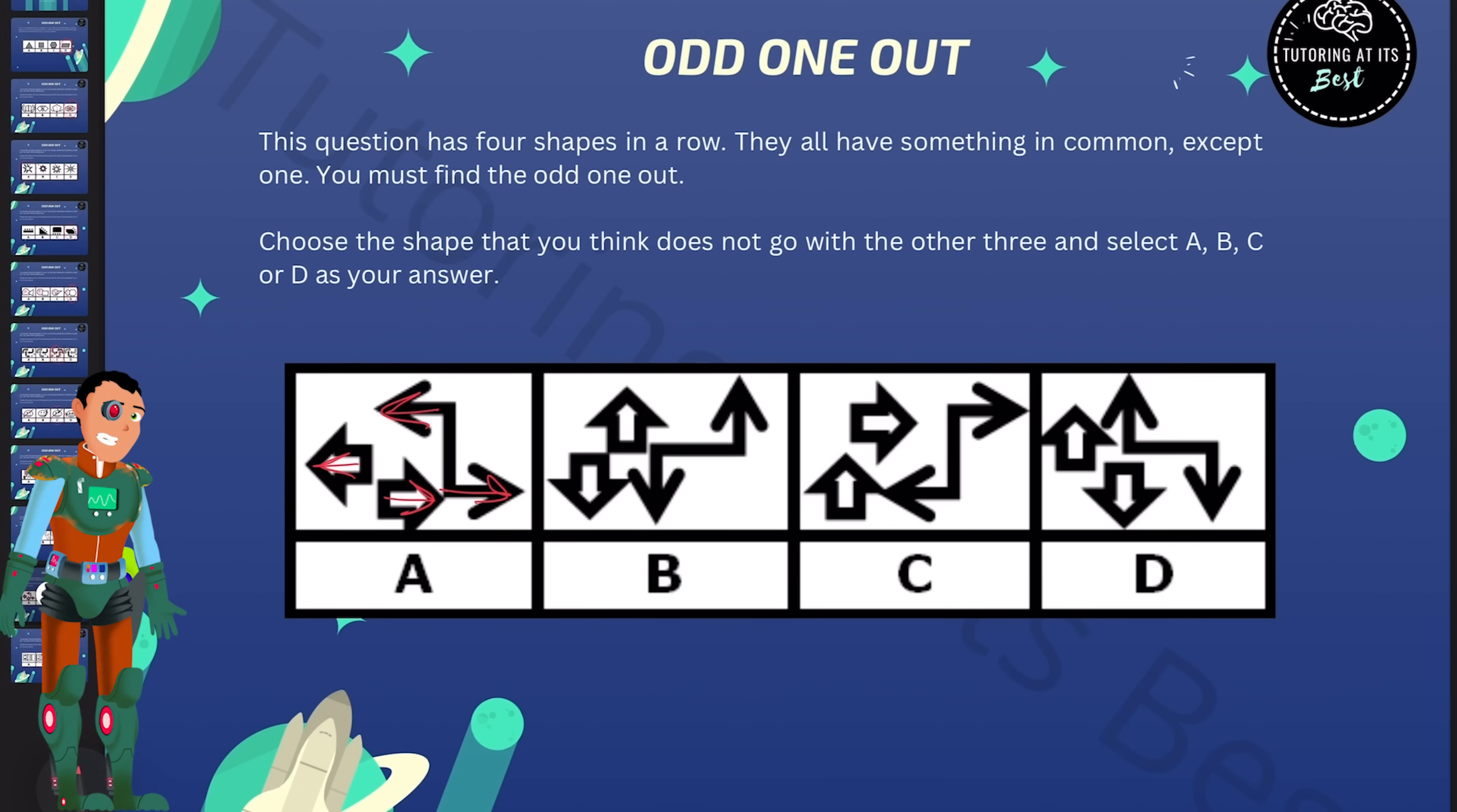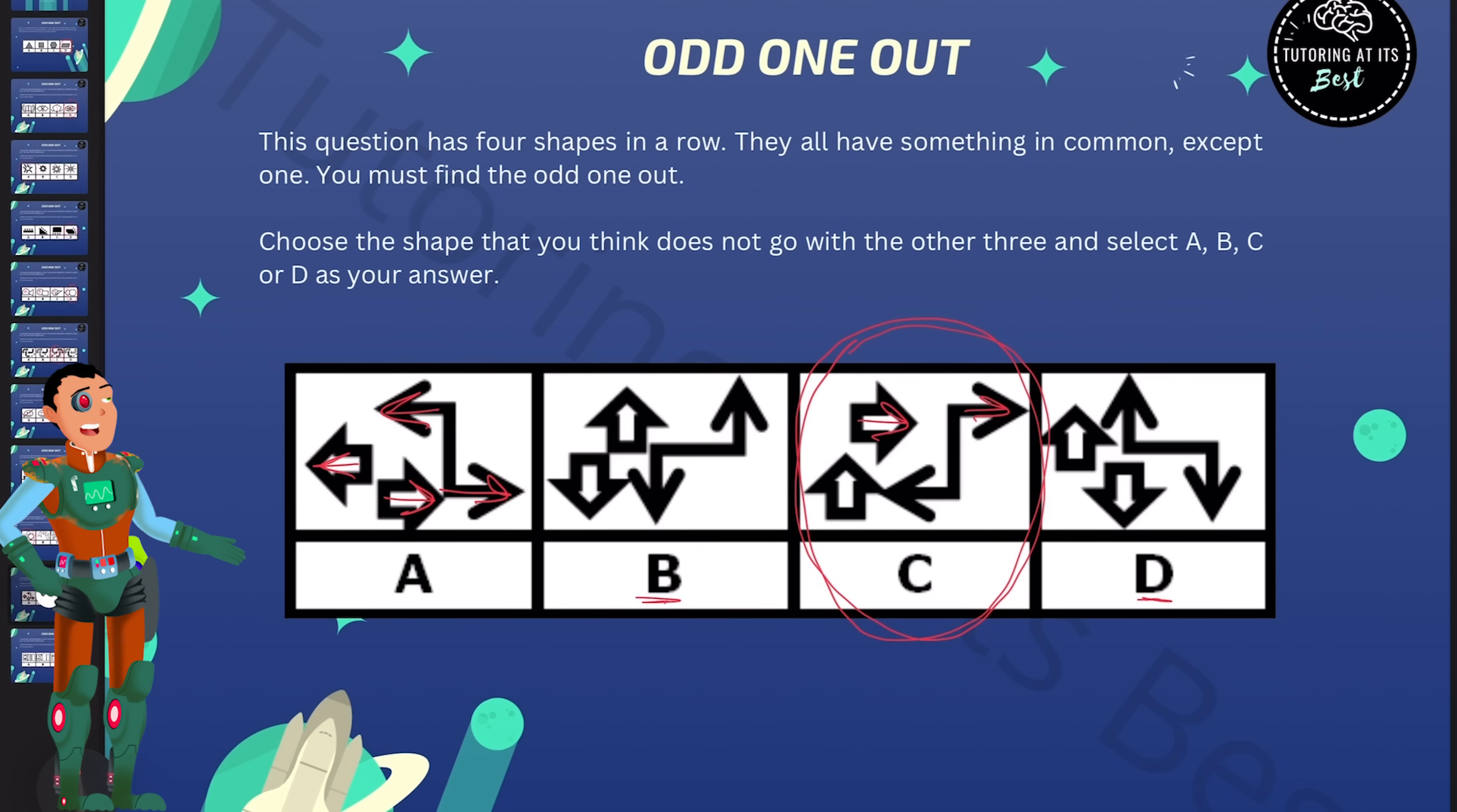We know that this is also reciprocated in both B and D, but for C, it's not the case because we have one going to the right and another going to the right. But one is going to the right, but one is going to the left, whilst the other is going up. So for that reason, C is the odd one out.